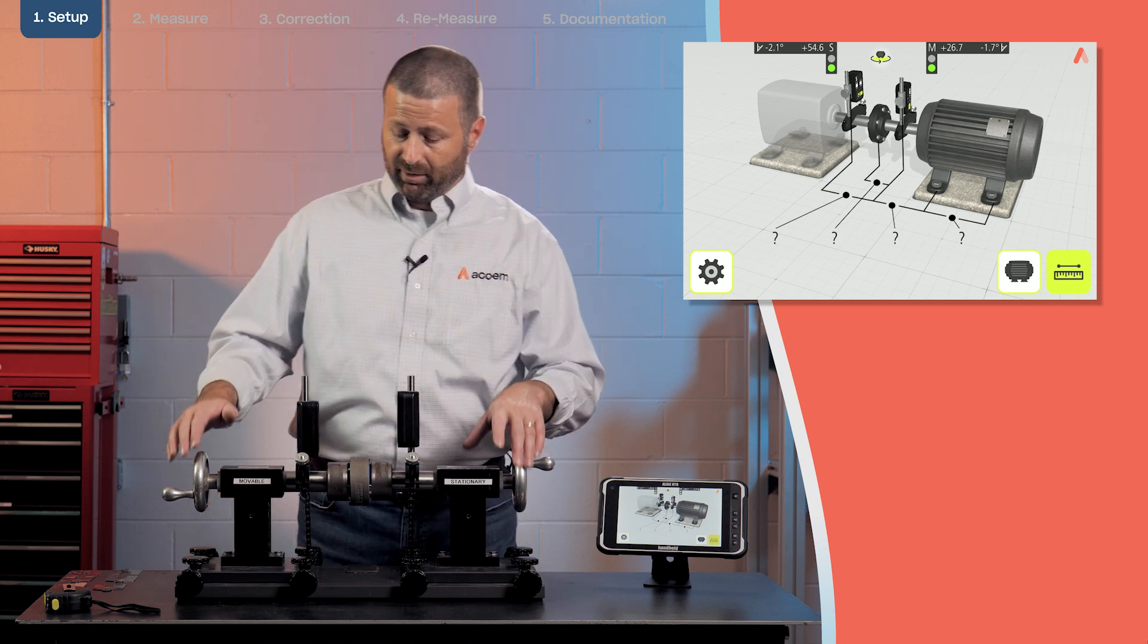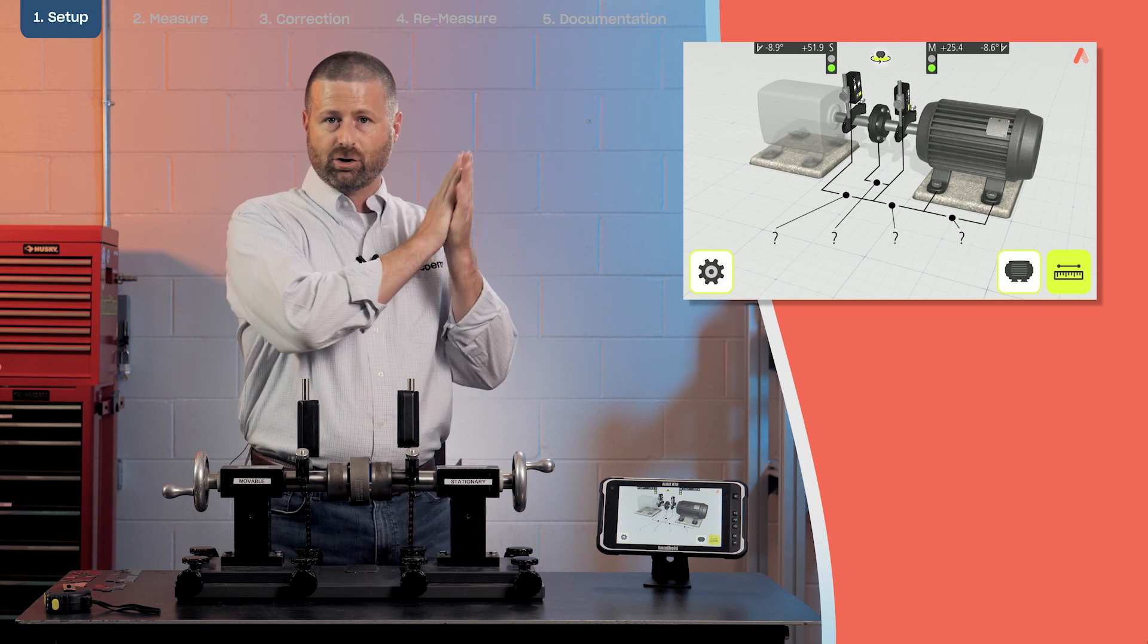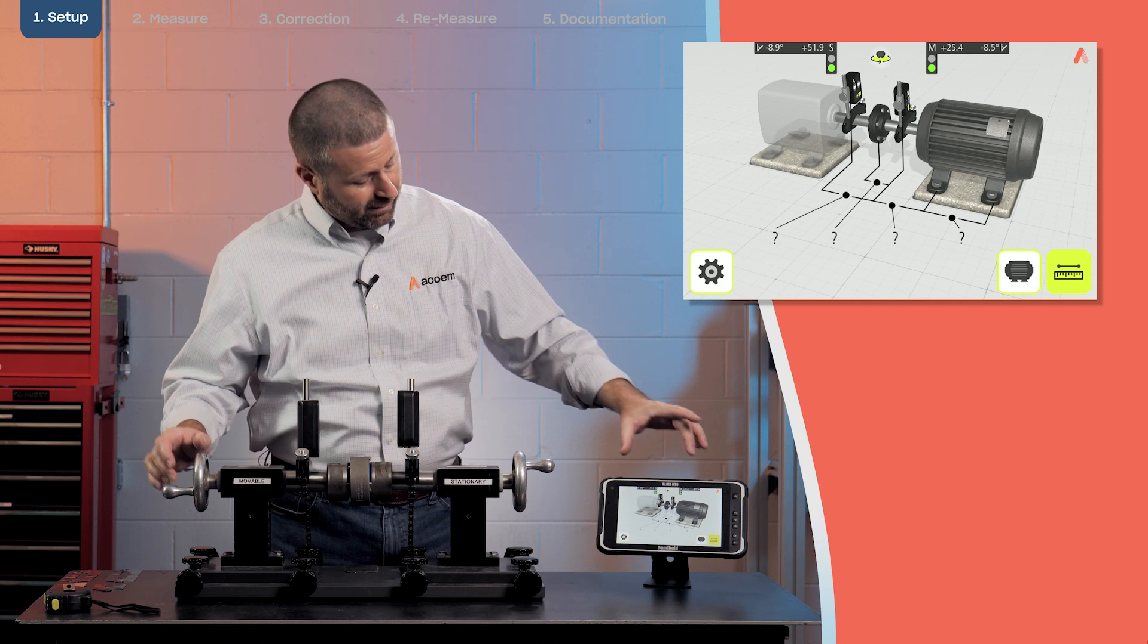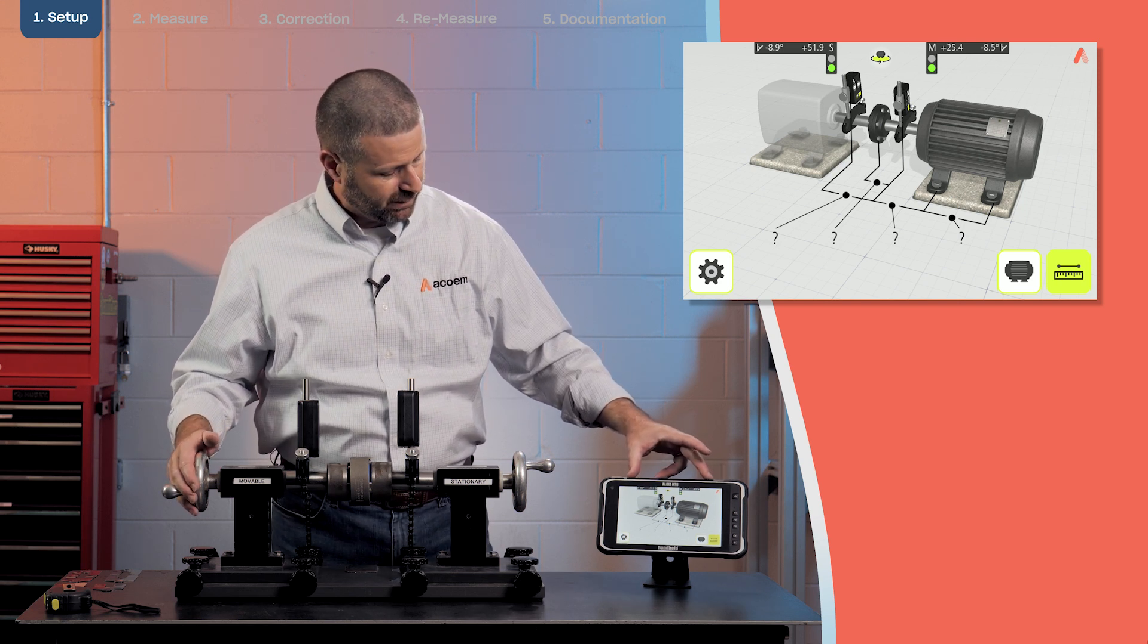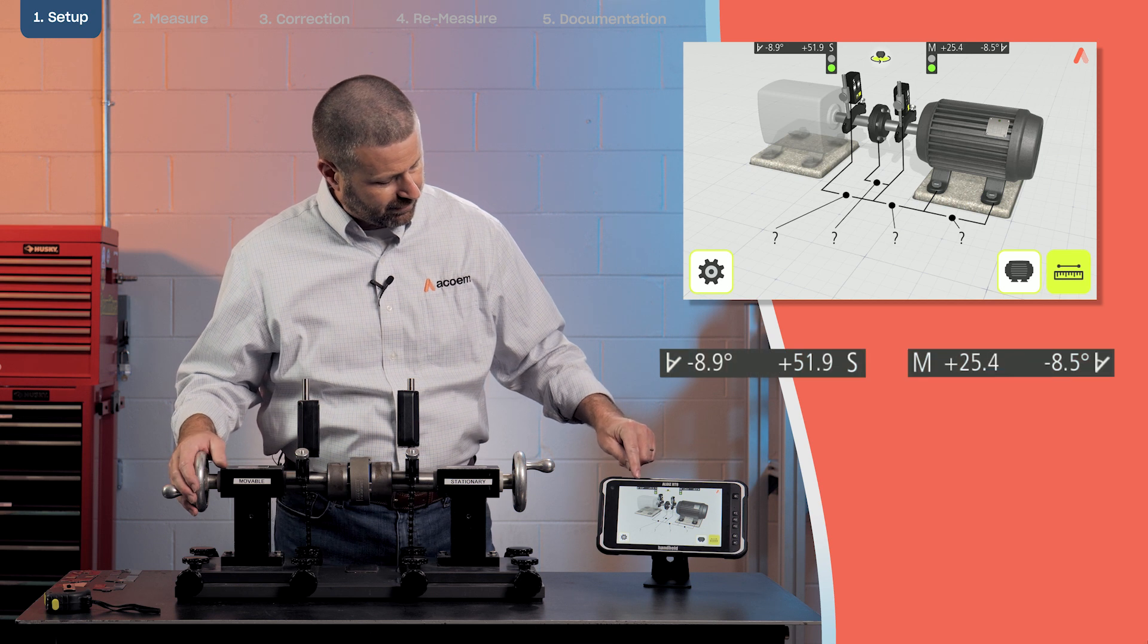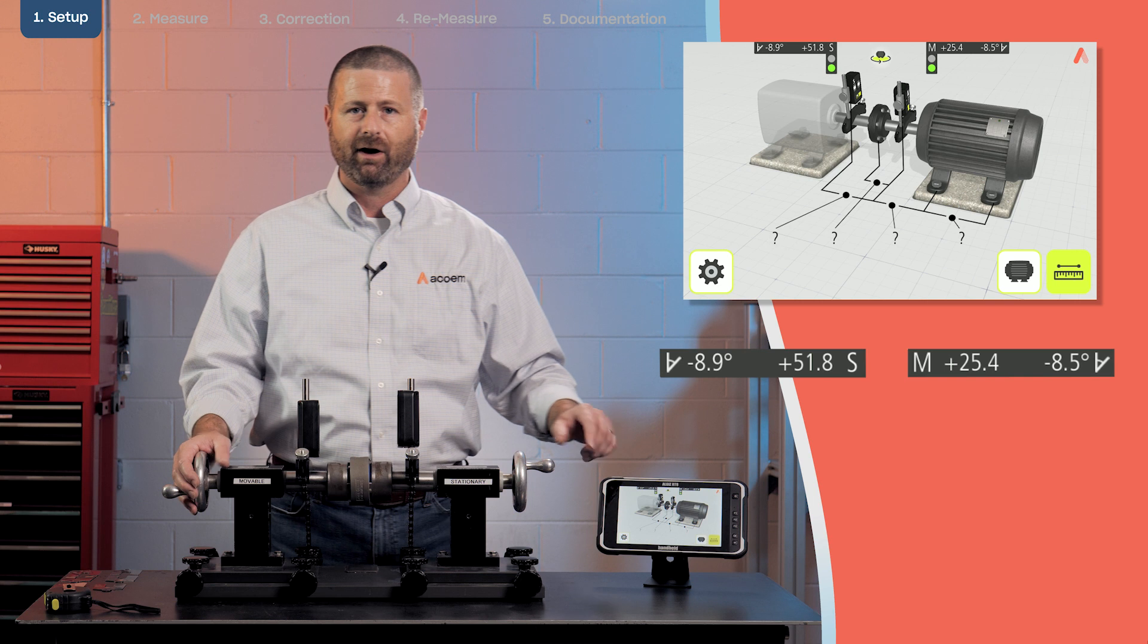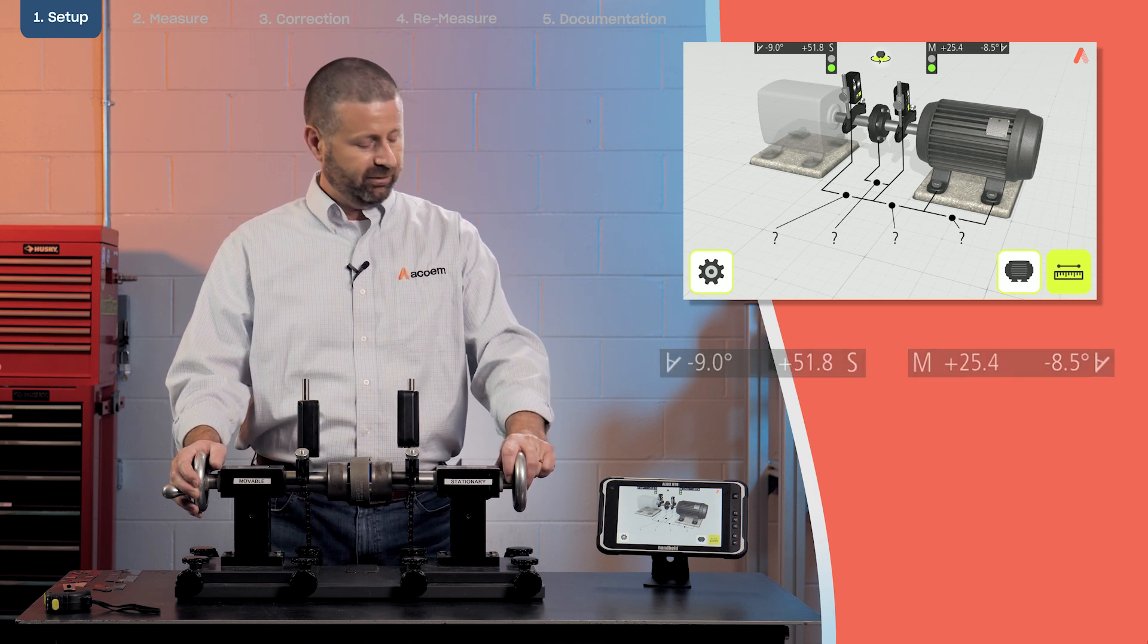The next step of course is also going to be that our sensors need to be square to one another. We can double check that by looking at the angle display on the display unit. In this case I have the S sensor at 8.9 and the M sensor at 8.5. These should be within about one degree of one another to start off with.